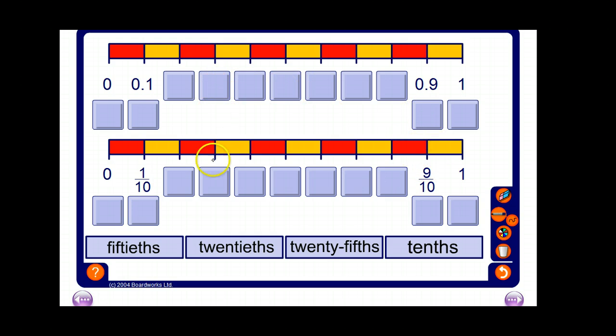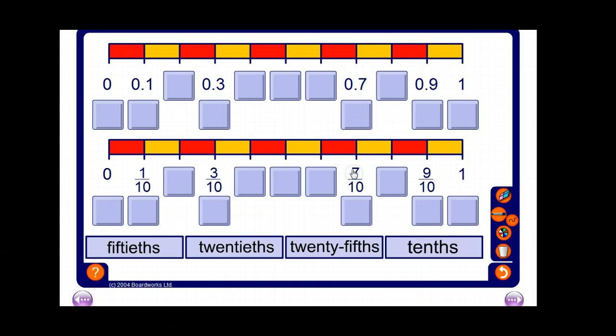We can work out other ones as well. So there's other nice ones. So if we had 3 tenths, that must be 0.1, 0.2, that must be 0.3. In the same way you could have 0.7, it must be 7 tenths.